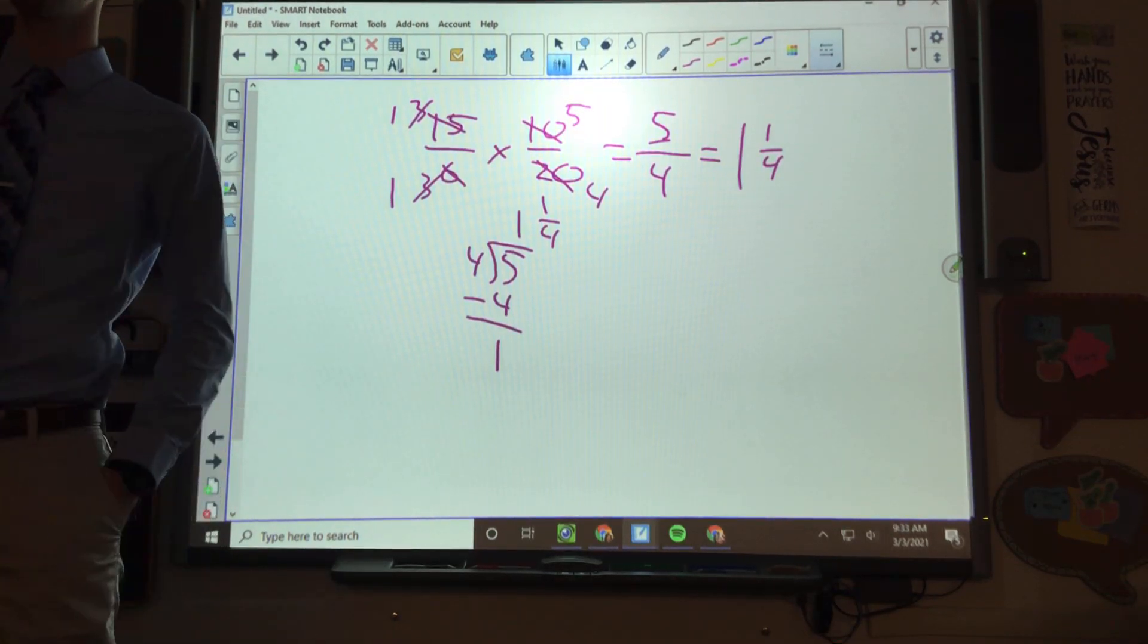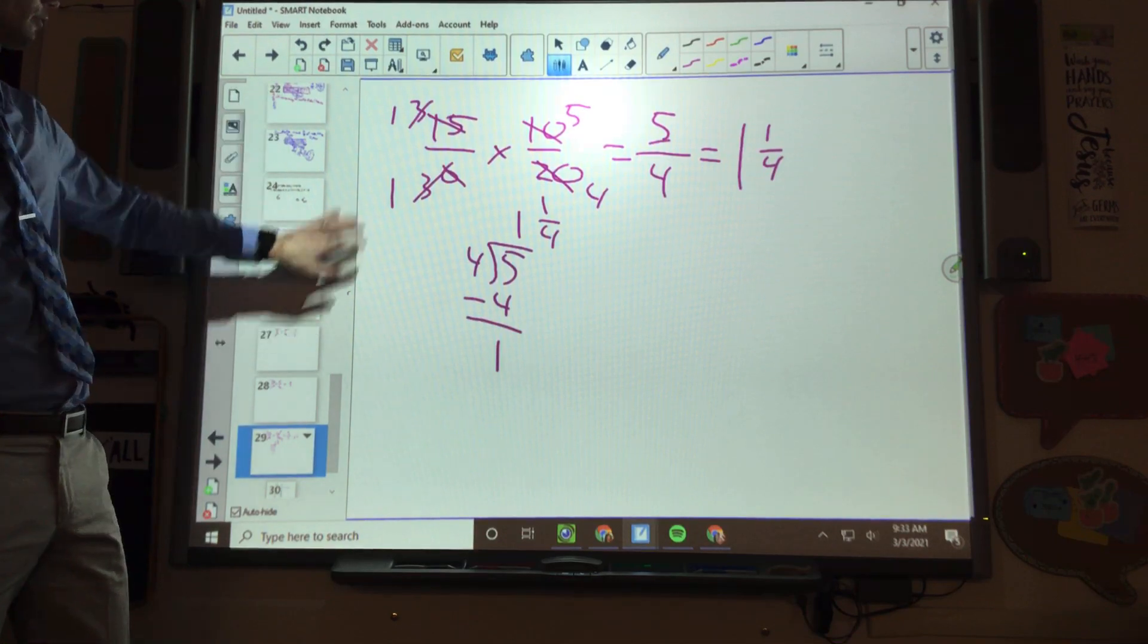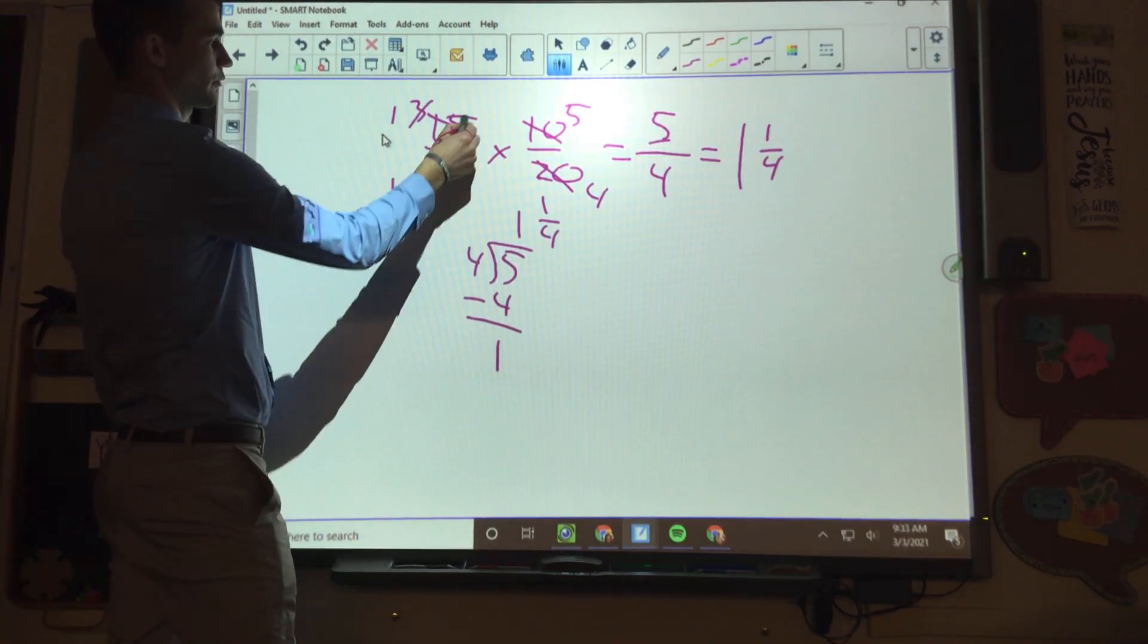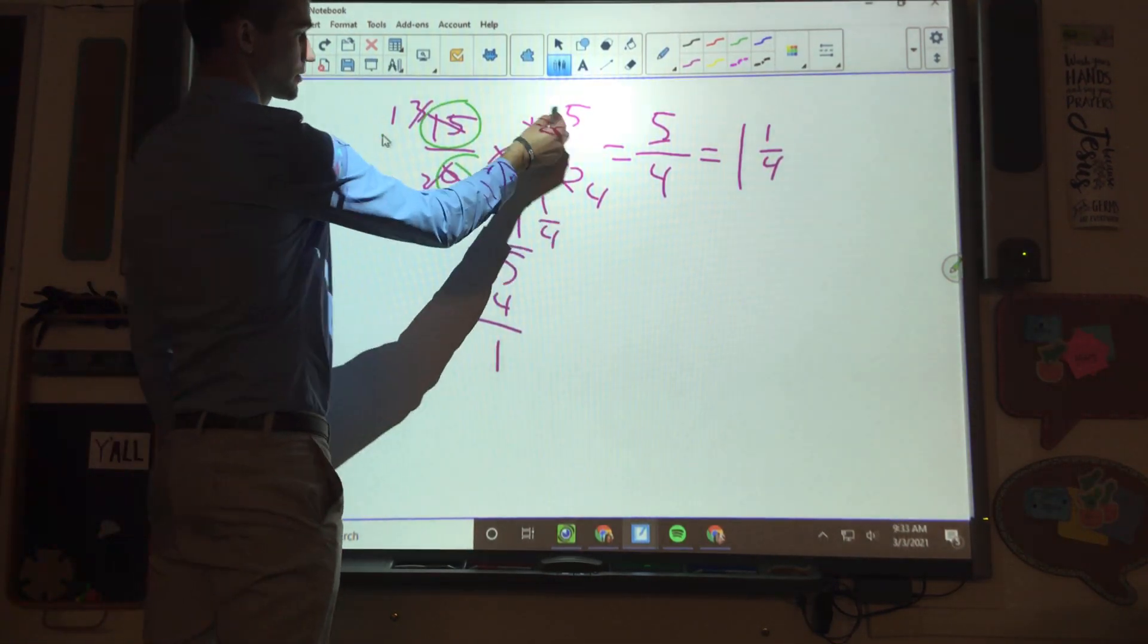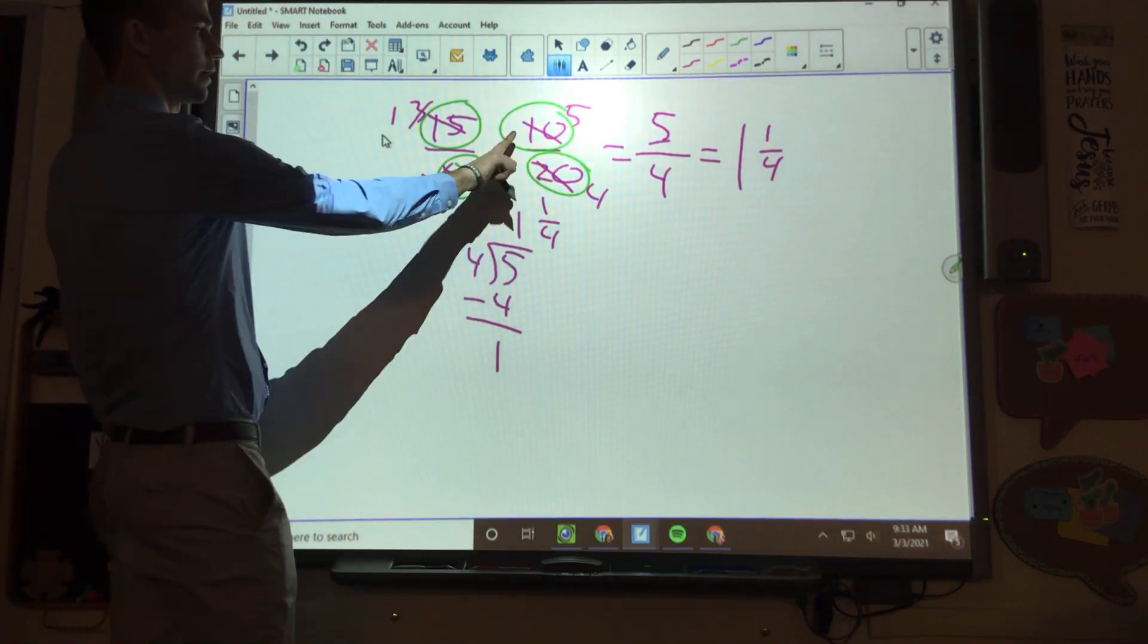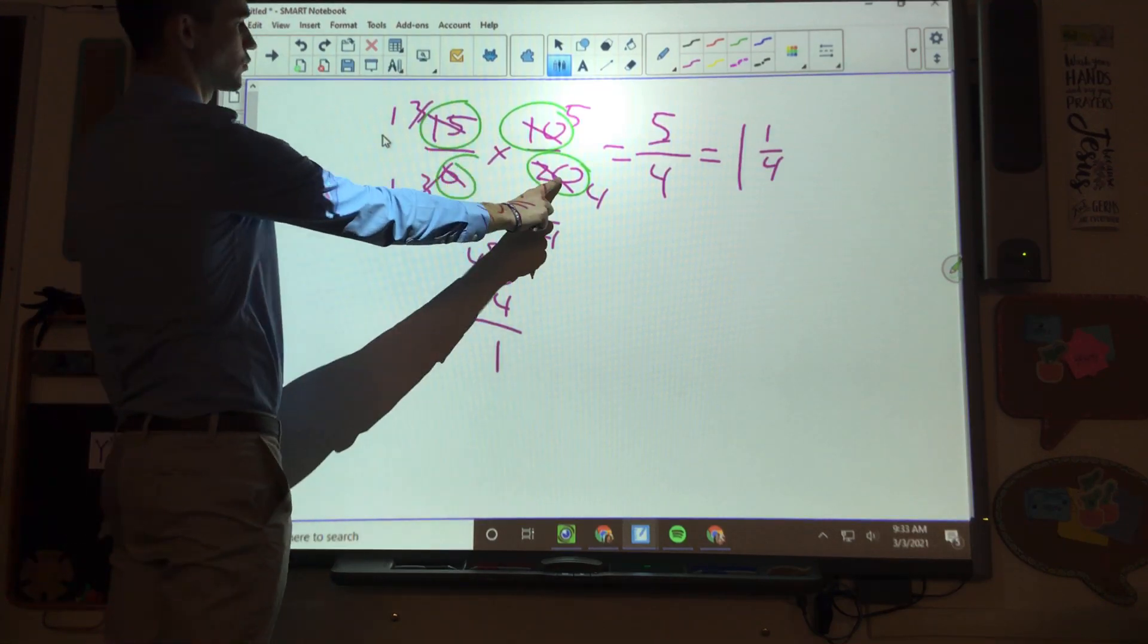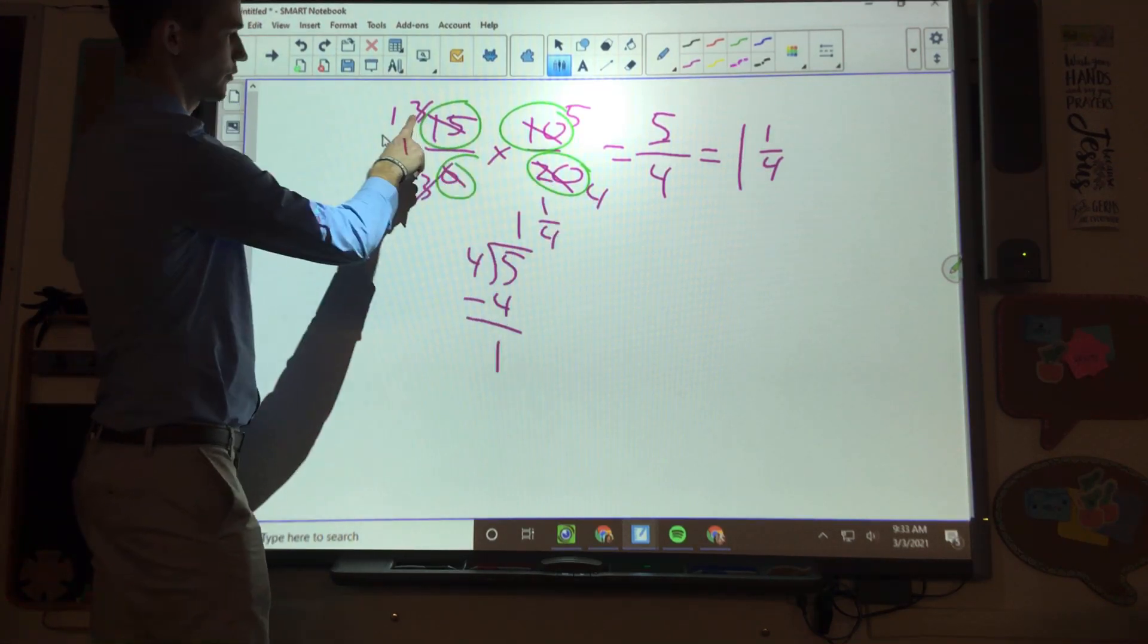Alright, so we were talking about multiplying improper fractions versus fractions. We went through a lot of different ones. This was the last one we were at. We did 15 over 6 times 10 over 20. Remember we said, we're going to look, what can we reduce? We said 15 and 20 both divide by 5, this becomes 4, this becomes 3.